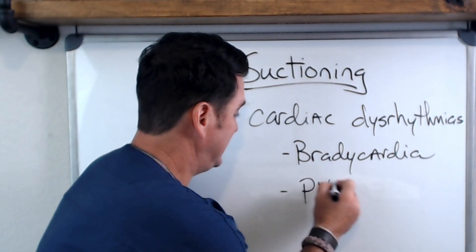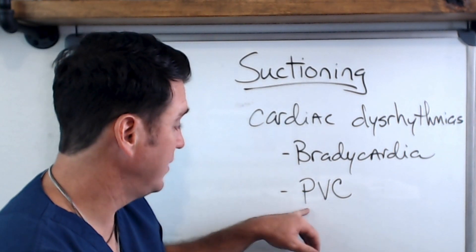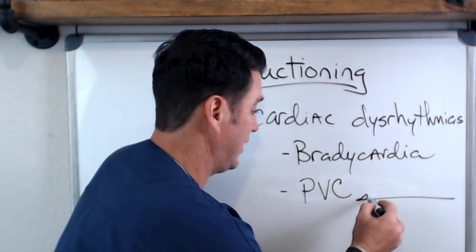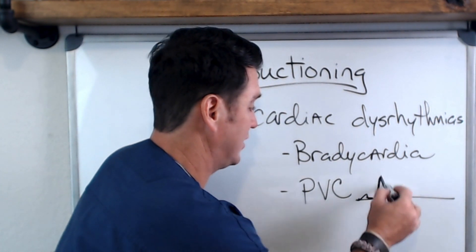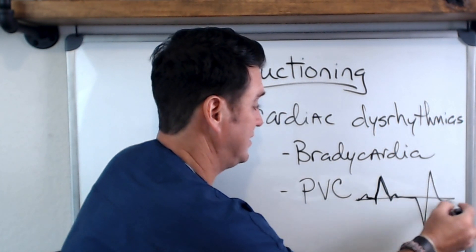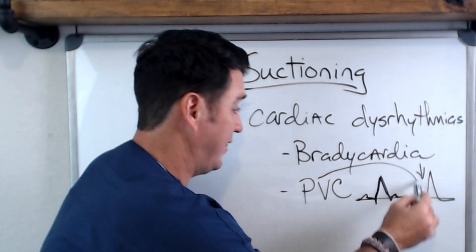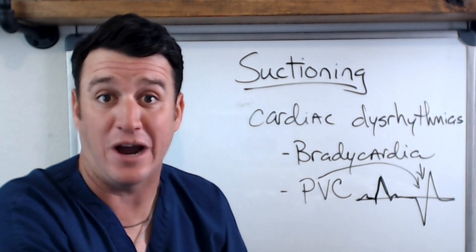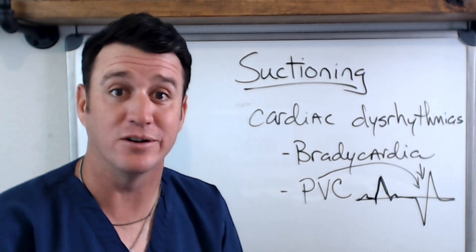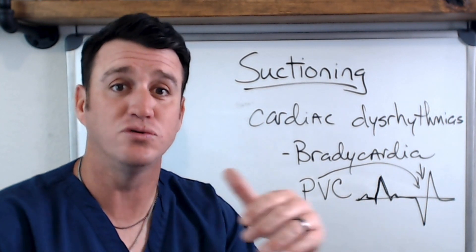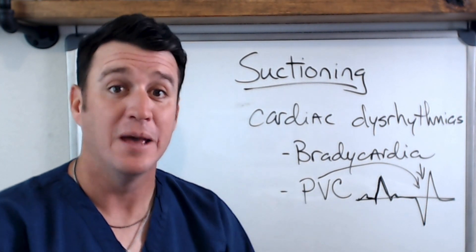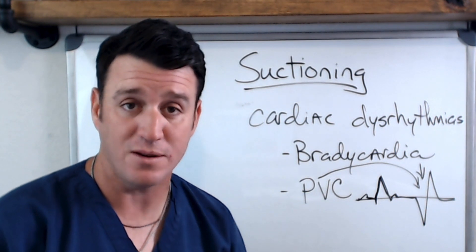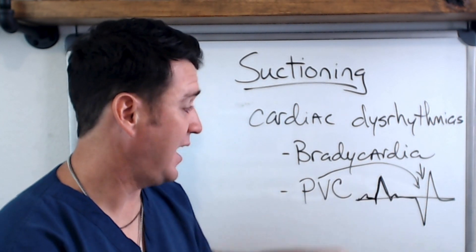The other cardiac hazard is PVCs — premature ventricular contractions. If you see an abnormal EKG beat, that's a PVC. This can happen in response to irritation and/or hypoxemia. When your exam asks what you would do, the answer is to stop suctioning and provide 100% oxygen, because this is probably happening in response to hypoxemia associated with the suctioning event.